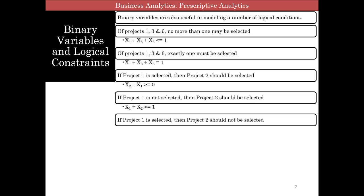If project 1 is selected, project 2 should not be selected. In this case, if project 1 is 1, x2 has to be 0, right? If x1 is 0, this can be 0 or 1, which means it'll always be less than or equal to 1.